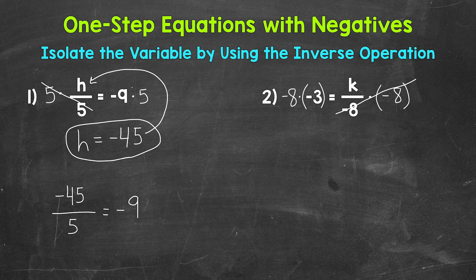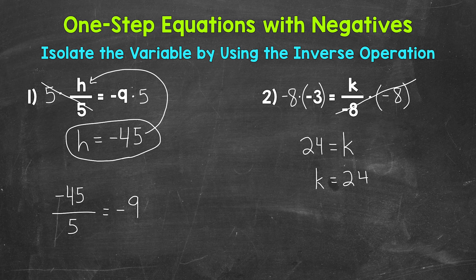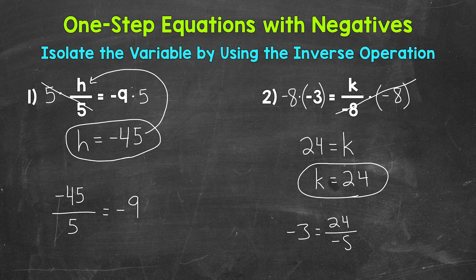The negative 8s equal 1 — negative 8 divided by negative 8, a negative divided by a negative is a positive — giving us 1k, which is just k. Our variable is now isolated. k equals, and on the left side, negative 8 times negative 3 — a negative times a negative equals a positive — so this gives us positive 24. k equals 24. Let's check by plugging 24 in for k: negative 3 equals 24 divided by negative 8. A positive divided by a negative equals a negative, and 24 divided by negative 8 does equal negative 3. We have the correct solution: k equals 24.